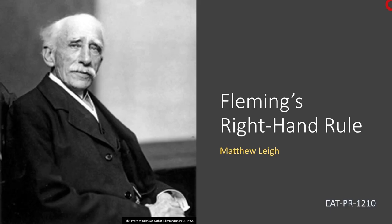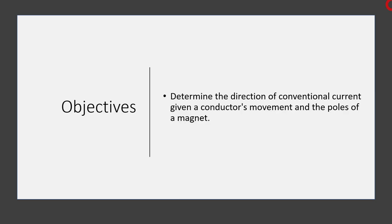Hello and welcome back. I'm Matthew Lay, and in this lesson we're going to talk about Fleming's right-hand rule. In this lesson we have one simple objective: to determine the direction of conventional current flow in a conductor when we move it into the presence of magnetic field lines. We also need to know the poles of the magnets to determine the direction of those magnetic field lines.